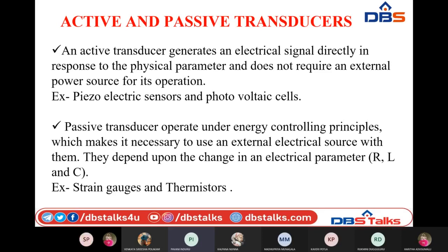Next, coming to different types of transducers — we have electrical transducers, conical transducers, and the basic transducers we are going to discuss in this session are active and passive transducers. An active transducer generates an equivalent amount of electrical signals directly in response to the physical parameter applied to it. For example, if we apply displacement it converts that into voltage, and if we apply temperature it gives us an equivalent electric voltage.